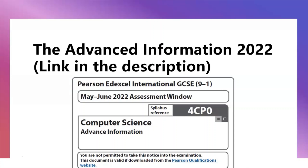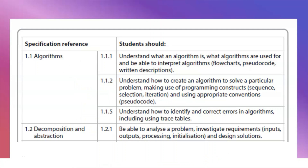With that out of the way, let's get started. Section one looks at algorithms, decomposition and abstraction. You need to understand how to write and read pseudocode, write and read flowcharts, and how to trace them. We can see that sections 1.1.3, 1.1.4, 1.1.6, 1.1.7 and 1.1.8 are missing — so no searching and sorting, no bubble sort, no merge sort. No sorting algorithms are in paper one.